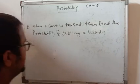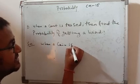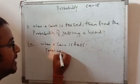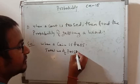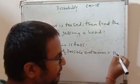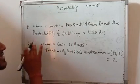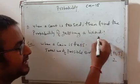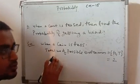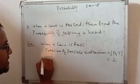Solution: when a coin is tossed, the sample space or outcomes — the total number of possible outcomes — is two, either head or tail. The question asks: find the probability of getting a head. If head comes, that will be the favorable outcome. If tail comes, that is unfavorable. So the favorable outcome is only head.